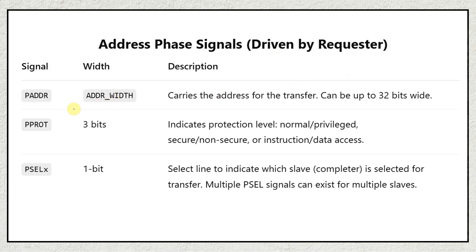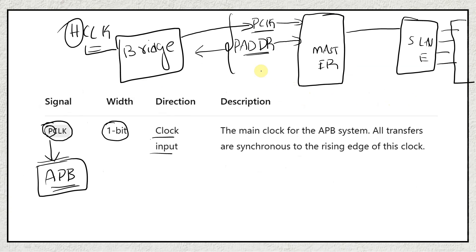PADDR carries the address for the transfer and can be up to 32 bits wide. PADDR is used for selecting which slave the master wants to communicate with, since we can have multiple slaves connected to a single master. PADDR serves two roles: selecting the slave and associating an address with a specific data packet — similar to how addressing works in AHB protocol.